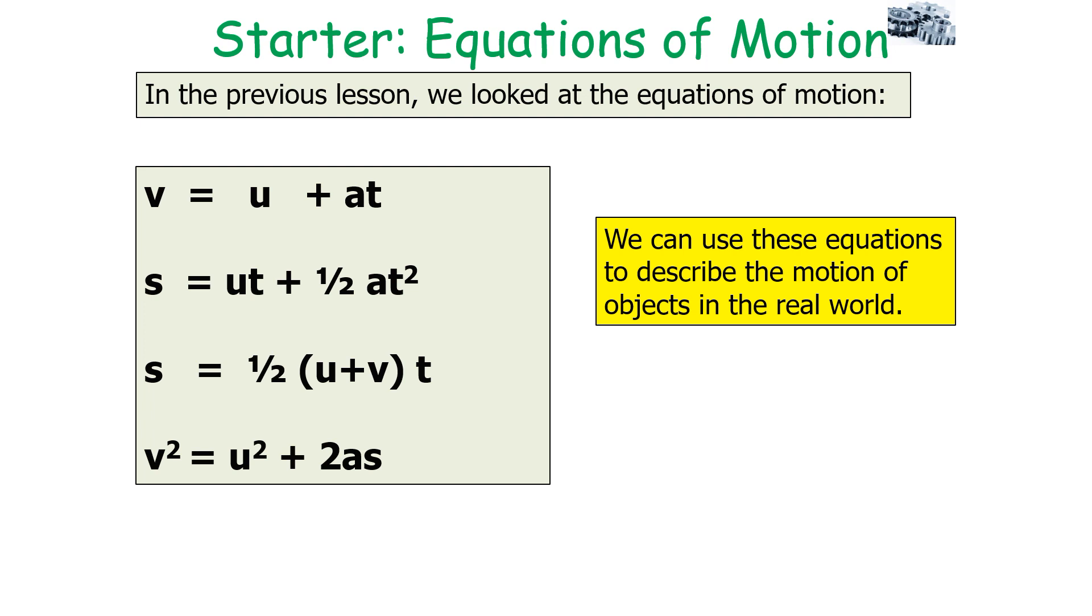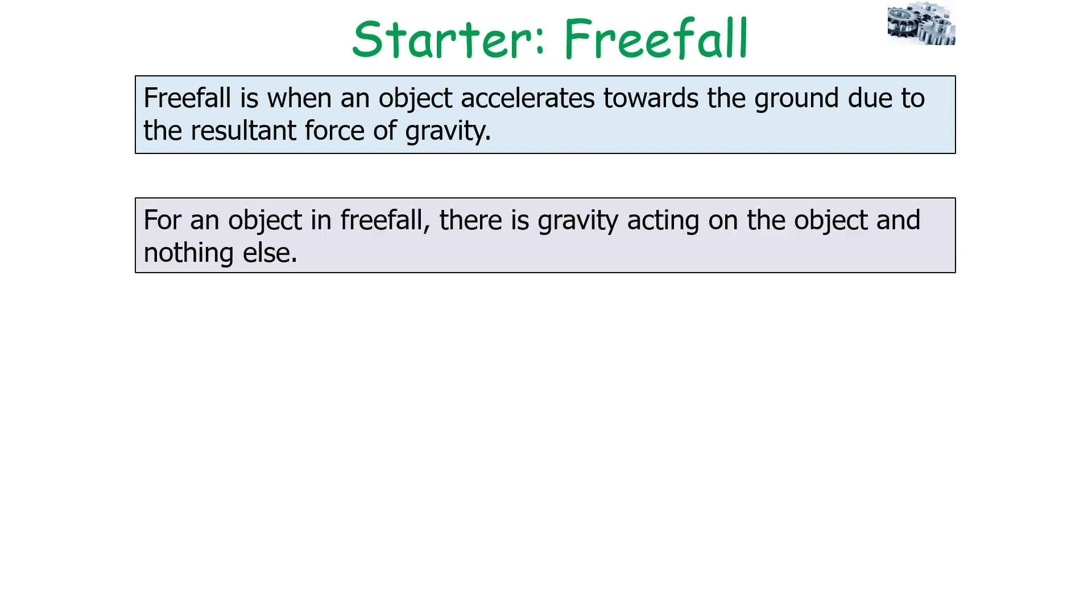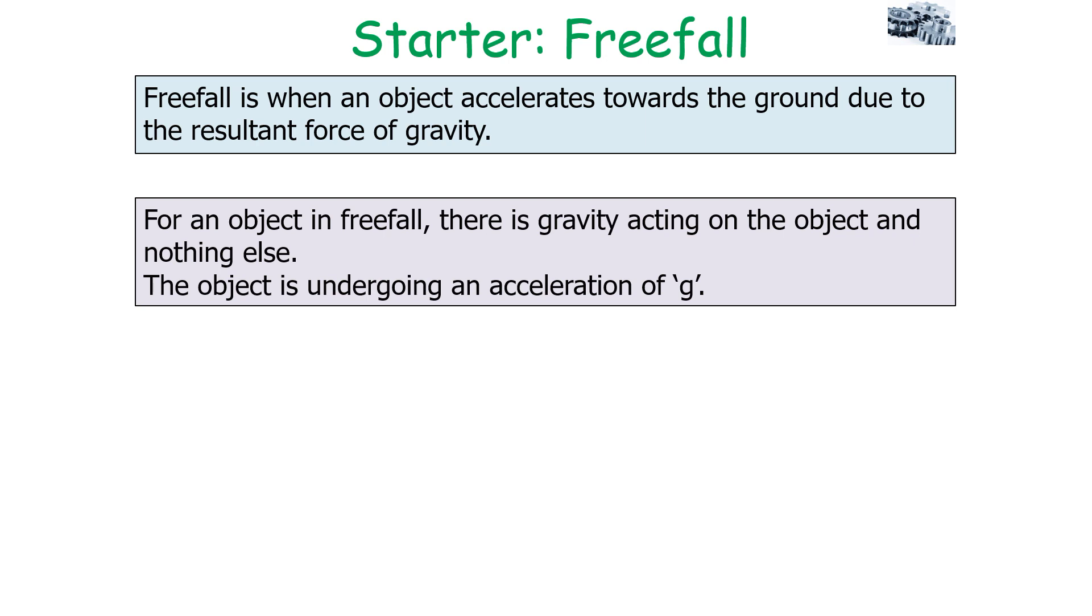We can use these equations of motion to describe the motion of objects in the real world, which includes an object freefalling. Freefall is when an object accelerates towards the ground due to the resultant force of gravity. For an object in freefall, there is gravity acting on the object and nothing else, so we can say the object is undergoing an acceleration of g.